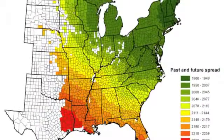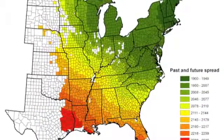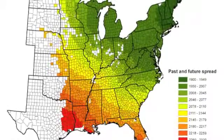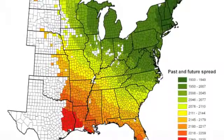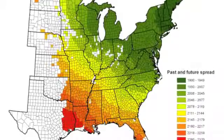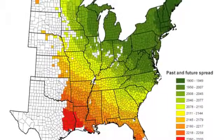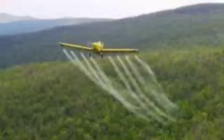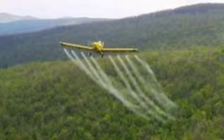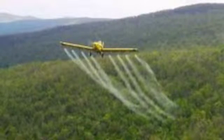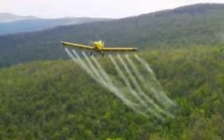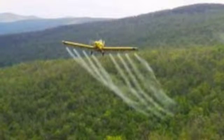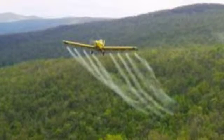According to the USDA Forest Service State and Private Forestry, the spread of the gypsy moth is happening at a faster rate than in the past and could infest much of the South and Midwest during the next 30 years. Therefore, it is crucial that this species continues to be monitored and controlled in these areas.